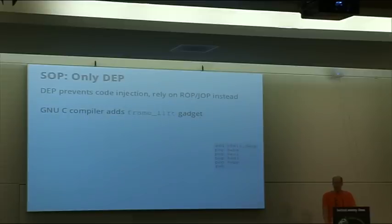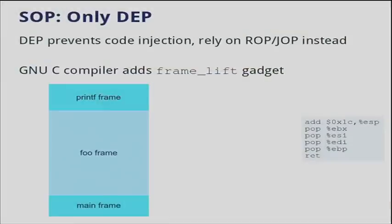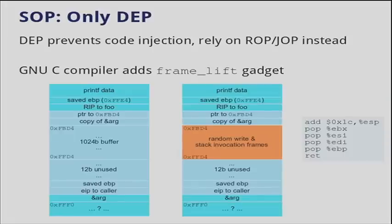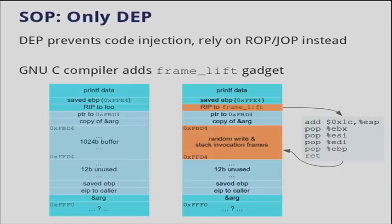This frame-lift gadget can be used to add 0x1C bytes to the stack and gives us control over the EBX, ESI, EDI, and EBP registers. Using this little gadget available at a static location in every single application, we can control four registers. Once again looking at the foo frame in the middle, we place our random write and stack invocation frames in our buffer. We then override the return instruction pointer using the random write to redirect to the frame-lift gadget. The frame-lift gadget pops the 44 bytes from the stack, ends up in our controlled buffer, and we can now execute our stack invocation frames.